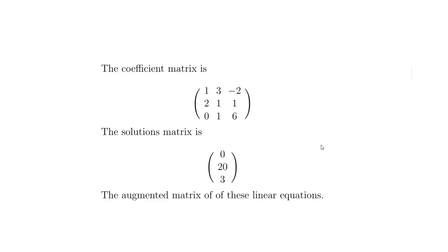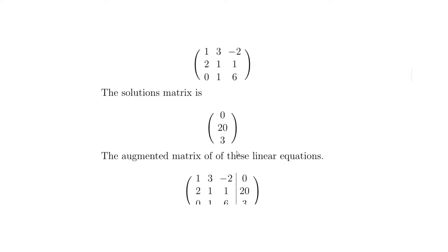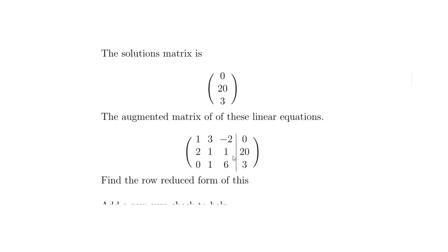The solution matrix contains 0, 20, and 3. Now we're going to merge the two matrices together and use row reduction to solve our equations. When merged, you've got all your coefficients on the left and your solutions on the right with a bar in between to keep them separate.